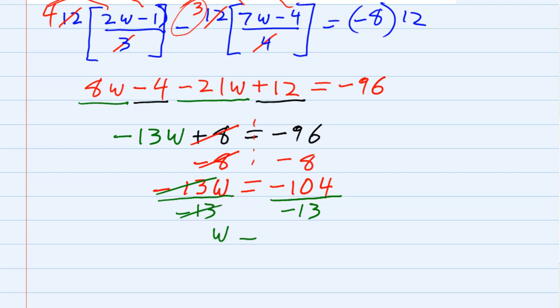leaving me with just the w, and that's what I've been shooting for all along. On the right hand side, the negatives cancel, giving me a positive, and 104 divided by 13 gives me 8. So, w equals 8 is our solution.